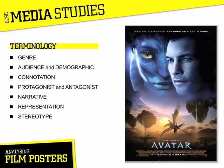A final term to get used to is unique selling point, or USP for short. This refers to a feature in a media text which makes it stand out or makes it different from other similar texts. This poster for Avatar uses the Blue Na'vi alien as a USP. Other Avatar marketing focuses on the large yellow eye of the alien to make the audience think there is something unique and different about this story.